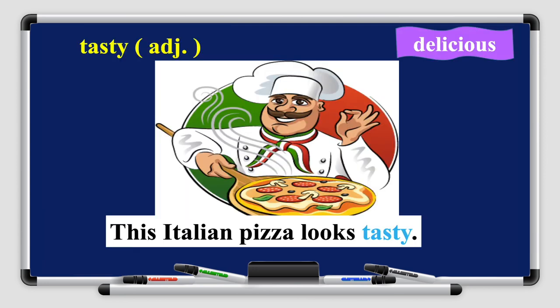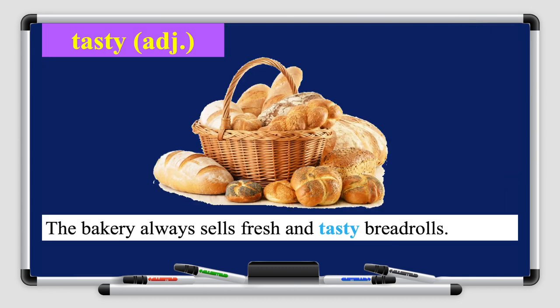The next word is 'tasty' — its synonym is 'delicious,' and tasty also means yummy. Let's read the sentences: this Italian pizza looks tasty, it was made by an Italian chef so it should be tasty. Another sentence: the bakery always sells fresh and tasty bread rolls — you can see a basket of breads. It looks tasty — you should eat it with some jam and butter.